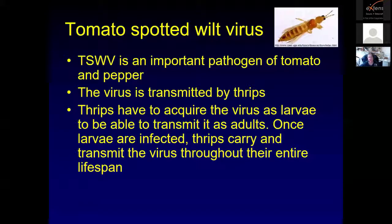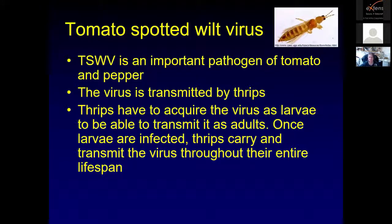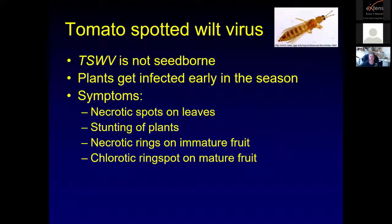The thrips have to acquire the virus as larvae on an infected plant in order to transmit it once they become adults. Once the larvae is infected, the thrips will carry and transmit that virus for its entire life. Tomato spotted wilt virus is not seed-borne, but plants can get infected early in the season as soon as thrips start moving. The symptoms on tomatoes and peppers initially show as small brown spots on the leaves, and you get stunted plants, especially if infected very early.